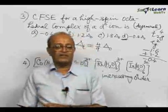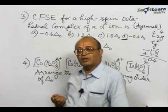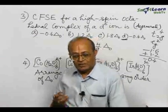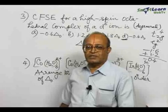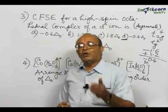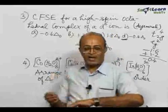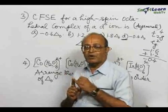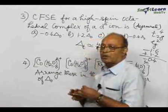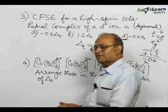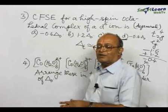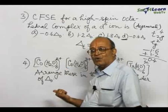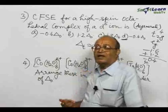Regarding the first point — nature of the ligand — we have what is called a strong field ligand and a weak field ligand, which we can determine from the spectrochemical series. There are ligands which will give a smaller value of delta O and ligands giving a larger value of delta O. For point number 2, for complexes having the same central metal ion, consider the charge: the higher the charge, the higher will be delta O.